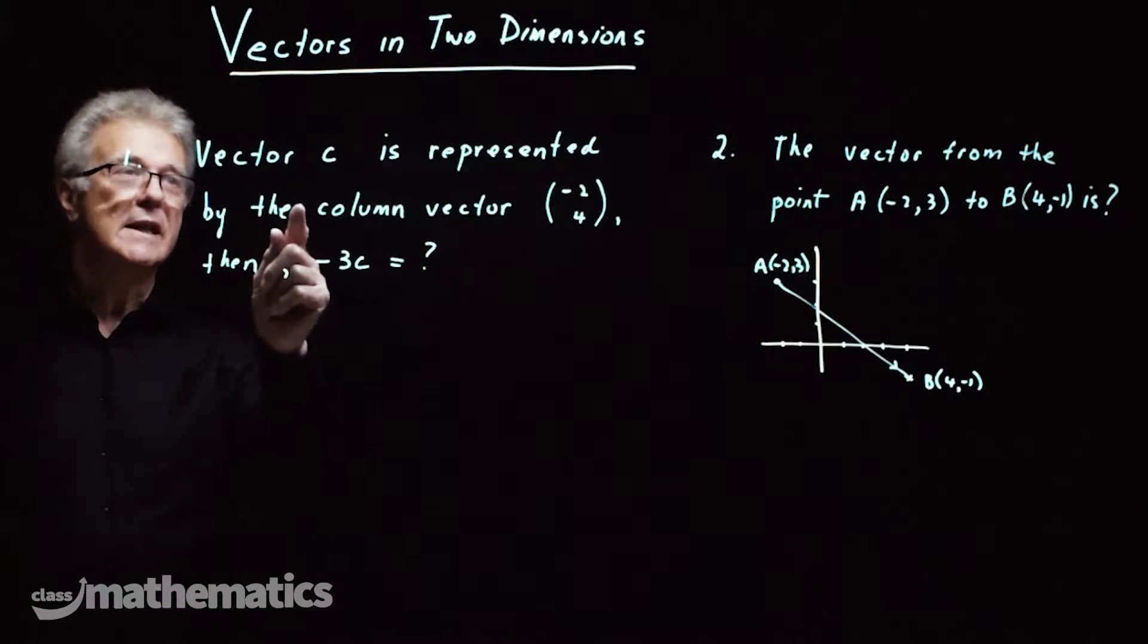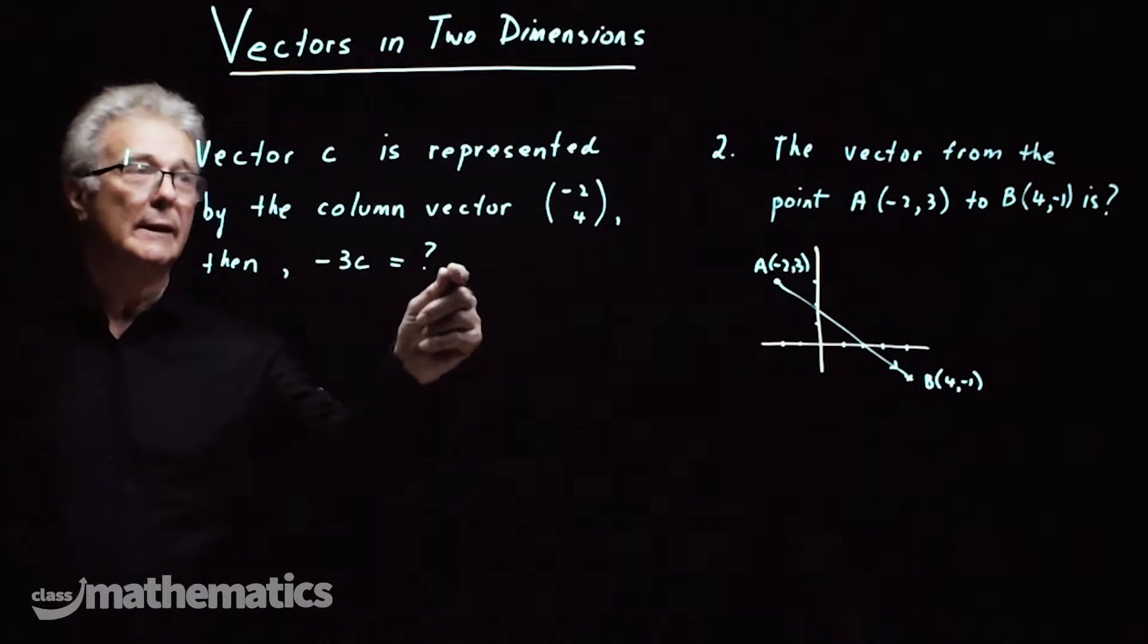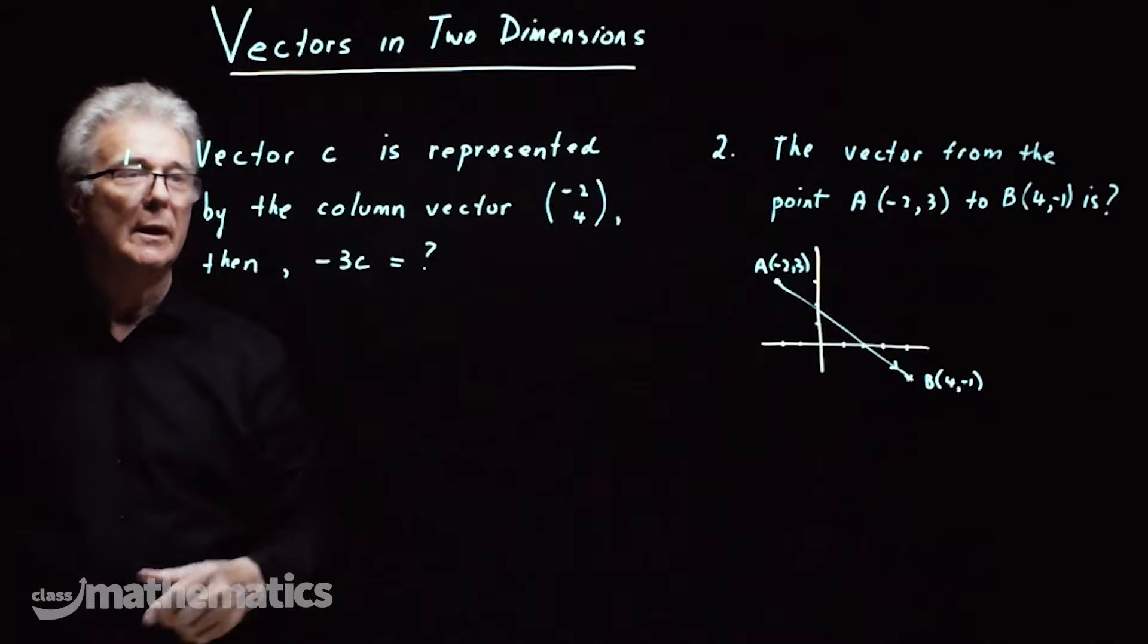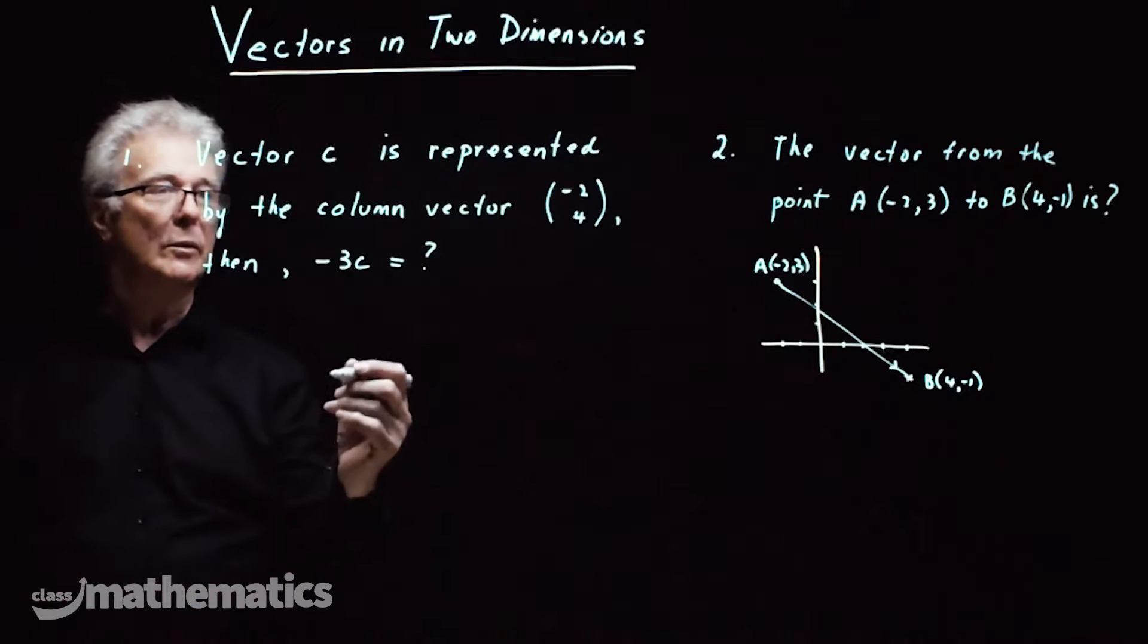First one, vector c is represented by the column vector, this one here, minus 2, 4, then minus 3c is equal to, well this is very simple.